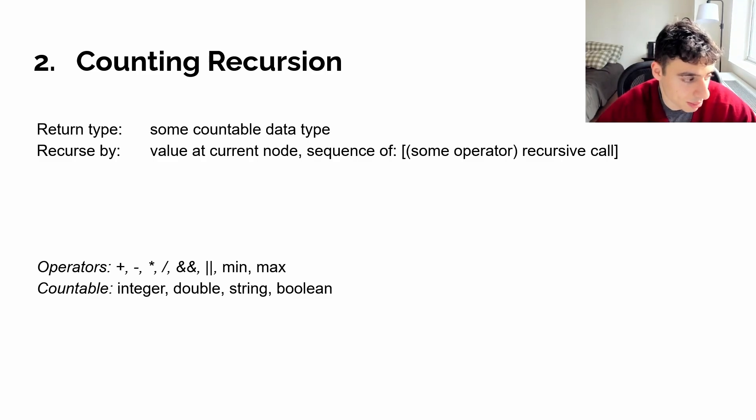So like, for example, these could be binary operators like plus, minus, multiplication, division. We have Boolean operators, and, or, not. And they can be non-binary operators like minimum, maximum, or any function.